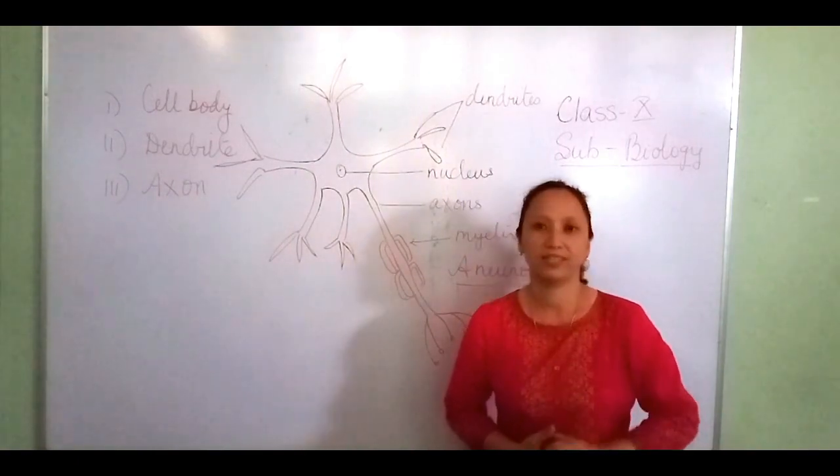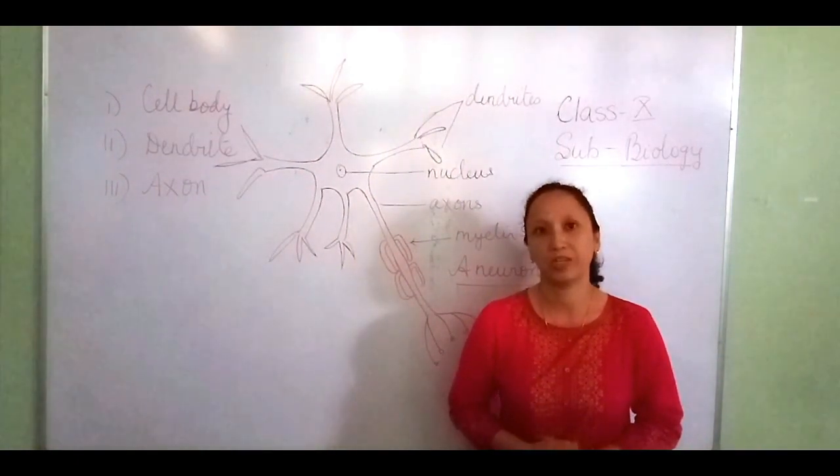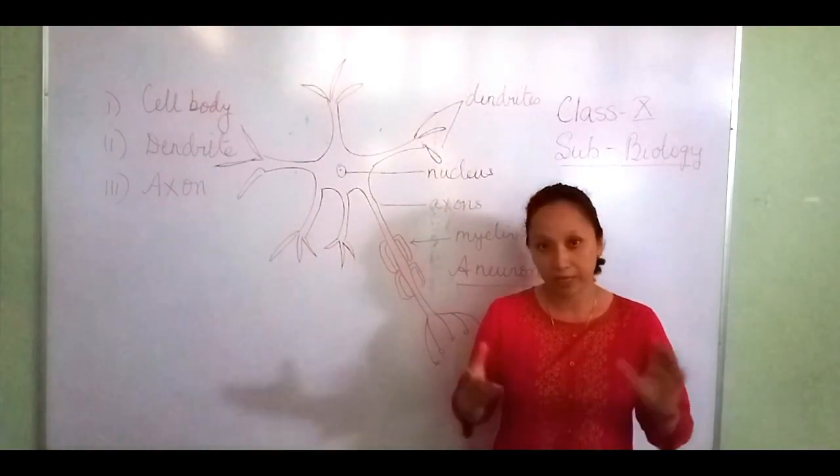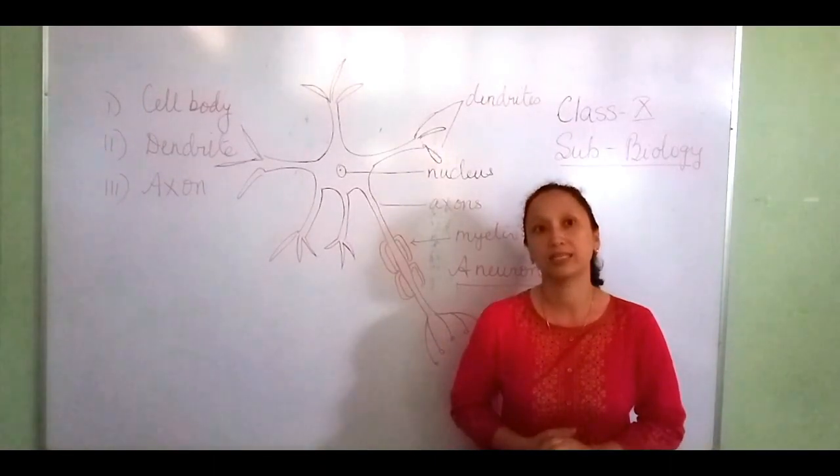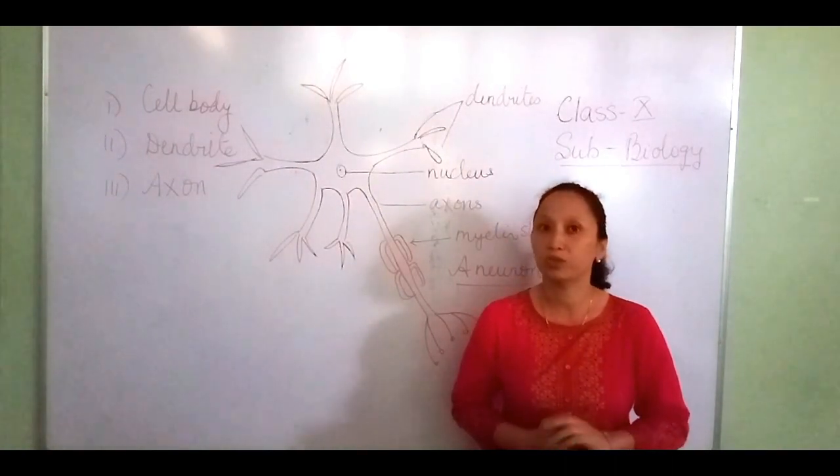A very interesting fact: neurons are the largest cells in the human body. Sometimes the length of a neuron is 90 to 100 cm, and typically it is divided into three parts.